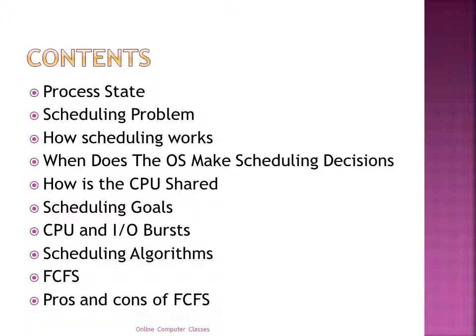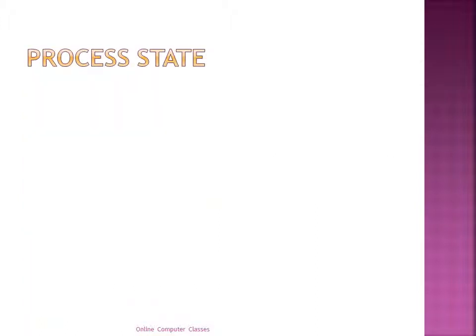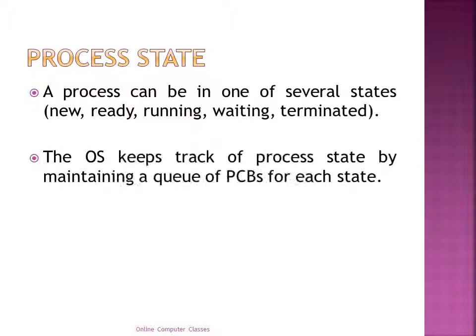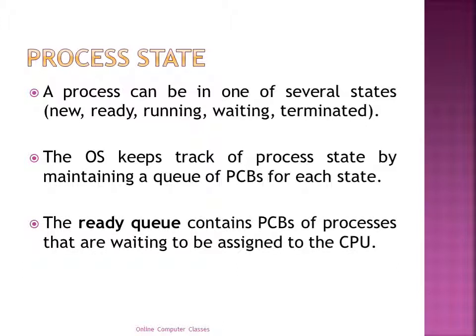First is process state. A process can be in one of several states: it can be in the ready state, new state, running state, waiting state, or terminated state. The operating system keeps track of process state by maintaining a queue of PCBs — Process Control Blocks — for each state. The ready queue contains PCBs of processes that are waiting to be assigned to the CPU.